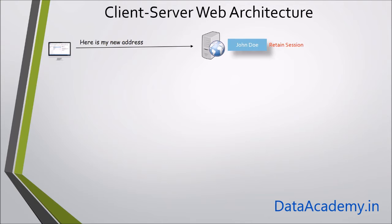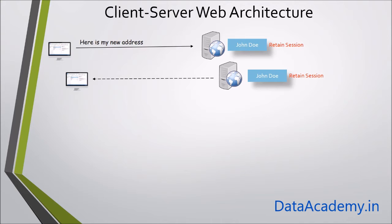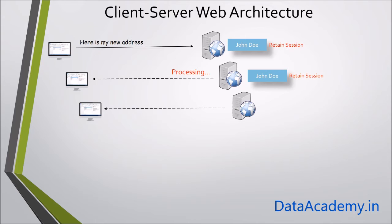The client provides additional information to the server, and the server sends an acknowledgement saying the request has been received and is being processed. But then the client isn't reachable — perhaps due to a temporary network disruption. While this is happening, the session still exists on the server. The server waits a few seconds and tries again, but there is still no communication from the client.